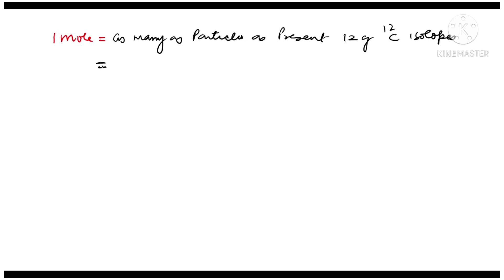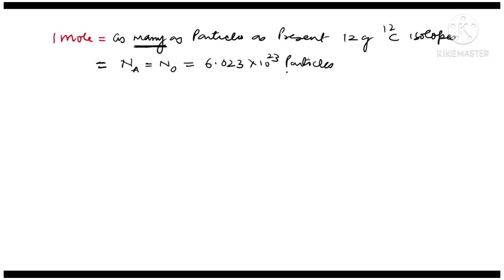According to Avogadro's number, this number of particles is nothing but Avogadro's number, which is denoted by either NA or N, and which is equal to 6.023 × 10²³ particles. Whenever I use the word 'particle' throughout this chapter, it means atoms, ions, or molecules — atoms for elements, ions for ionic compounds, and molecules for molecular compounds.